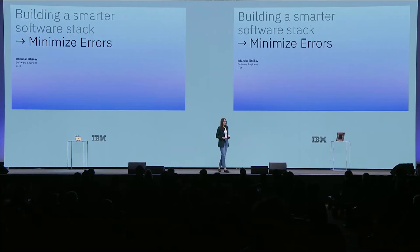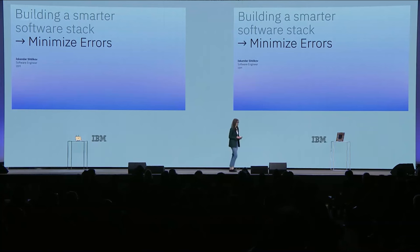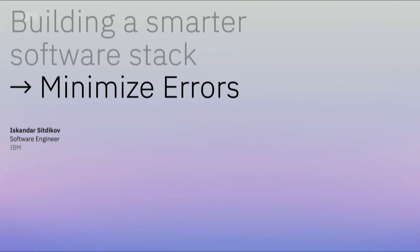Next, to talk about how AI can help us minimize errors, please welcome to the stage Iskandar Siddiqov. Thanks, Jen. I'm going to be talking about the combination of machine learning and quantum error mitigation and how bringing those tools together can offer many benefits to our users. AI has made tremendous advancement in recent years, developing new methods, models, and architectures for solving a variety of problems. But can we leverage AI's capability to negate the effects of errors in quantum computation?